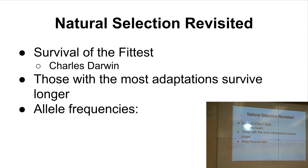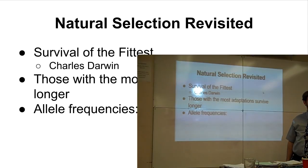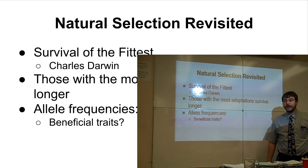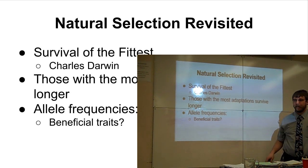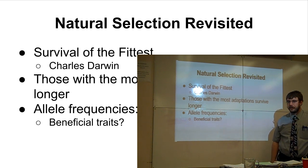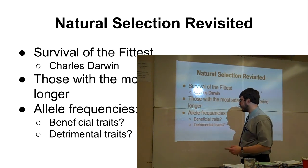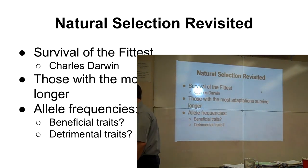It's all about allele frequencies. What are allele frequencies? How often an allele shows up in a population compared to the total. What's going to happen to the allele frequencies for beneficial traits? The beneficial traits will show up more often than the non-beneficial traits, so the allele frequencies for beneficial traits are going to increase. What about those detrimental alleles? They will decrease.